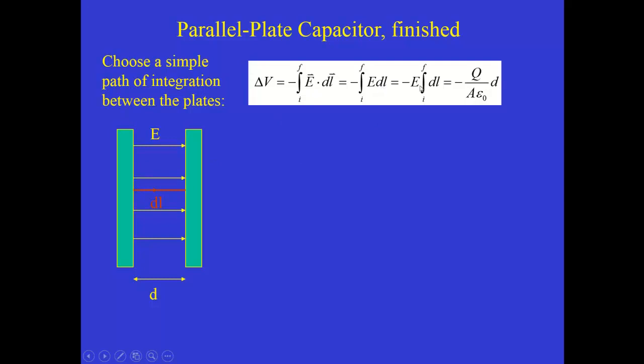Well, the definition of potential difference minus integral E dot DL. If E and DL are parallel, this becomes E times DL. The E along that path, you'll notice from the expression that we plugged in for E, it doesn't depend on where you are. The electric field is a constant in that region. So along that entire path, E can come outside the integral. And we just replace it with the result from the previous slide, Q over A epsilon zero. The integral DL just captures the entire distance between the plates, which we've already said was D. So now we have a simple expression for delta V. And we are almost done.